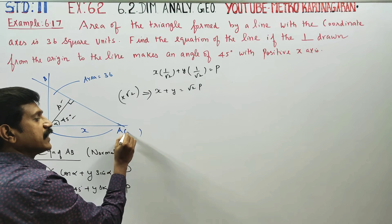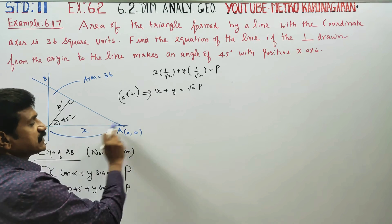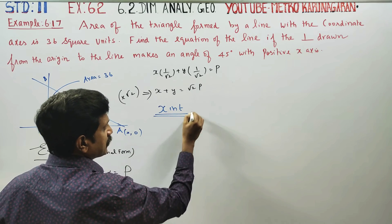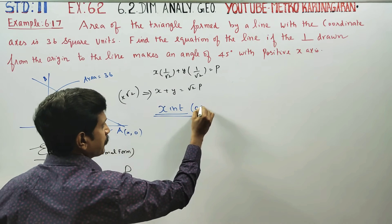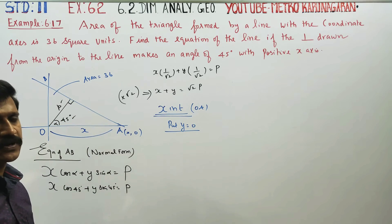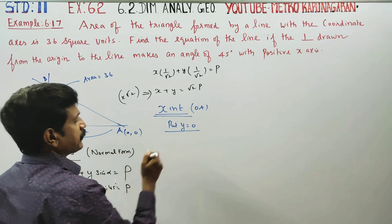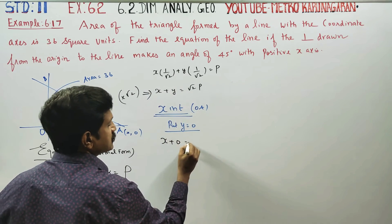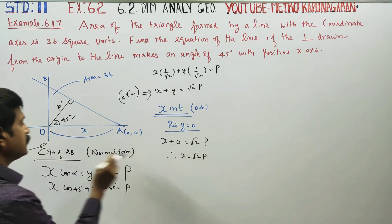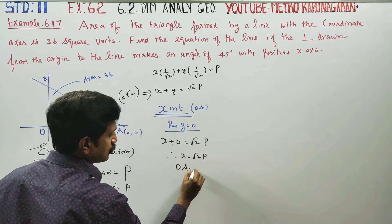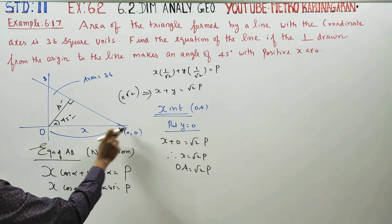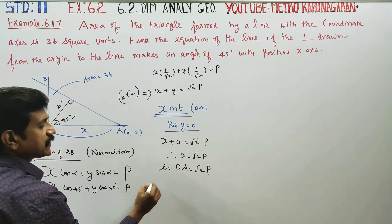To find the x-intercept OA, put y = 0. Substituting y = 0: x + 0 = √2P. Therefore x = √2P. So OA = √2P. This is the base of the triangle.